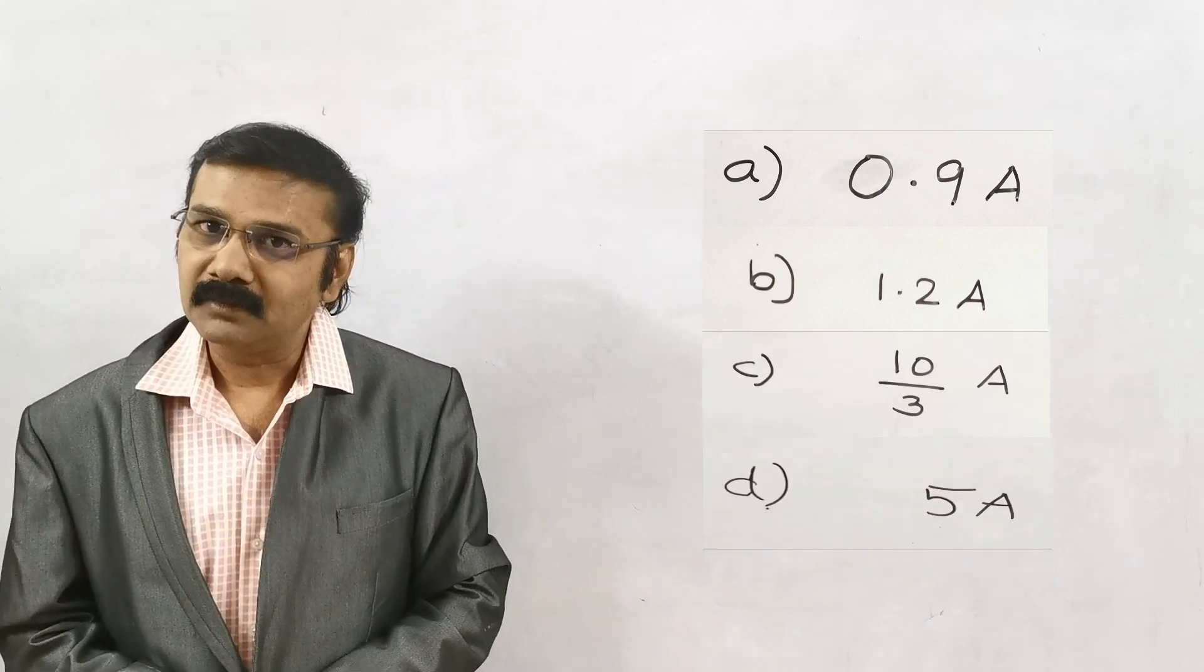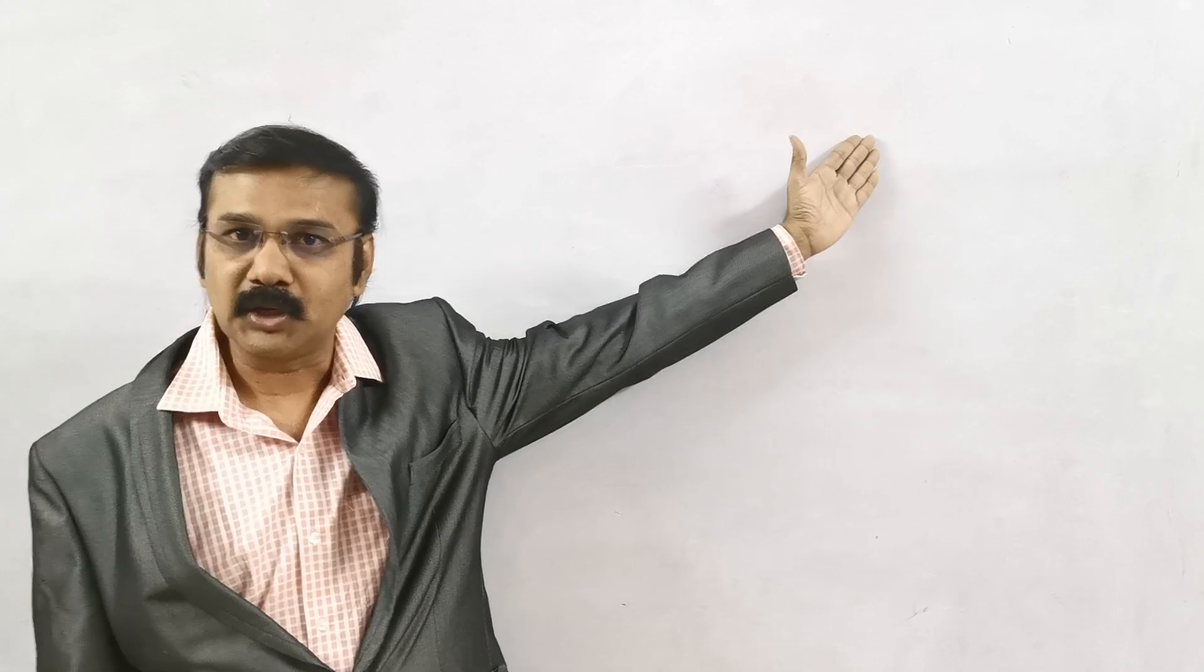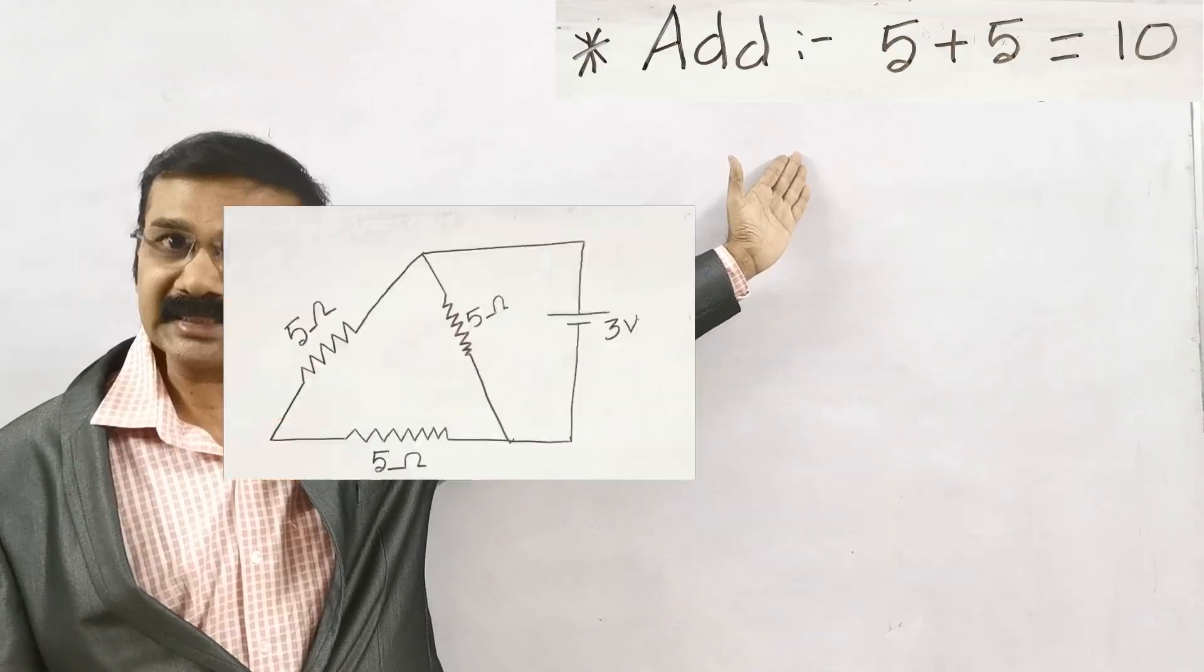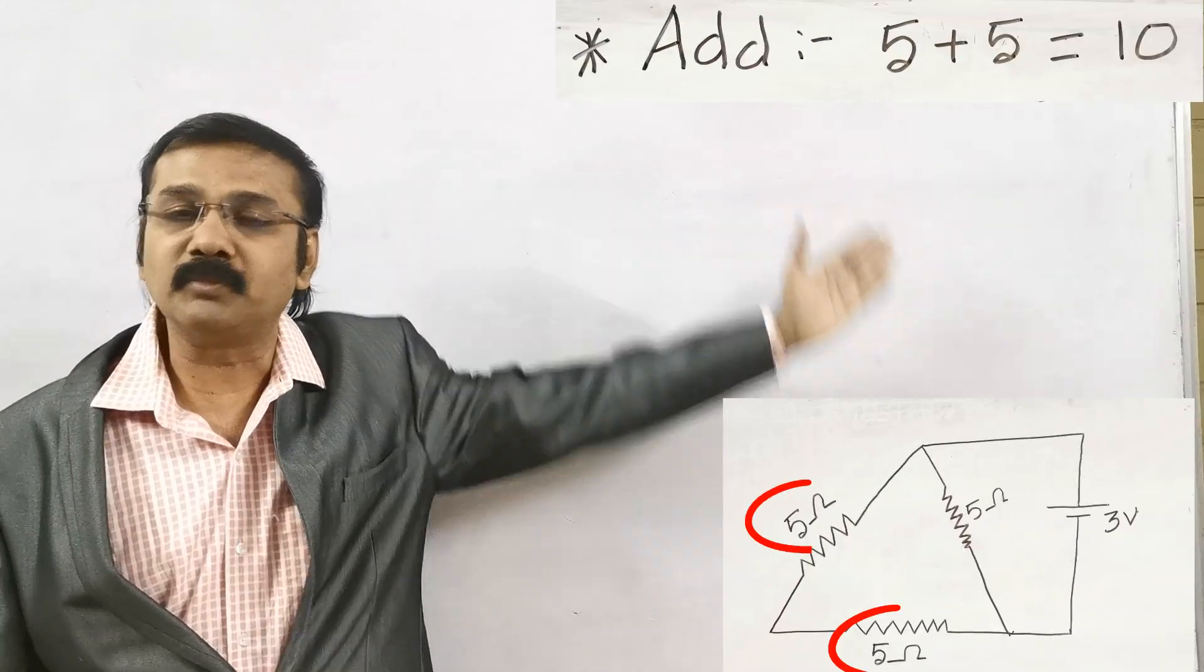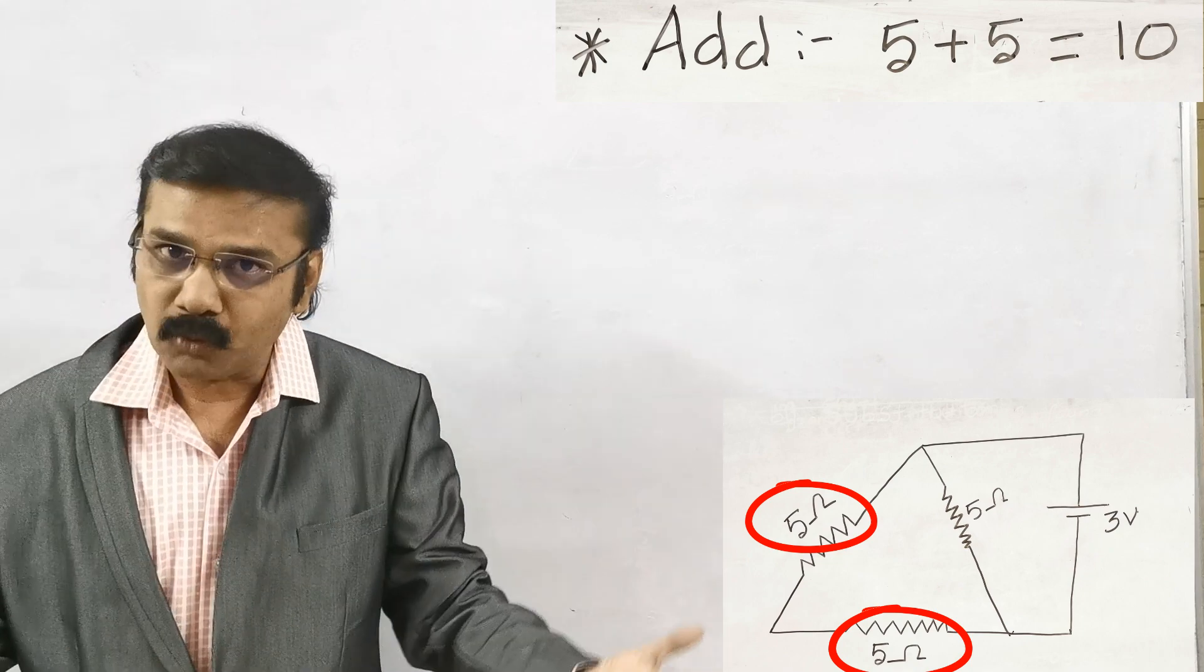You are supposed to find the answer within 15 seconds. The shortcut method I am implementing now is just you have to do it in your mind. For representation I am writing on the board. The first step is you have to add the two resistances, 5 ohms plus 5 ohms, which will give you 10 ohms.